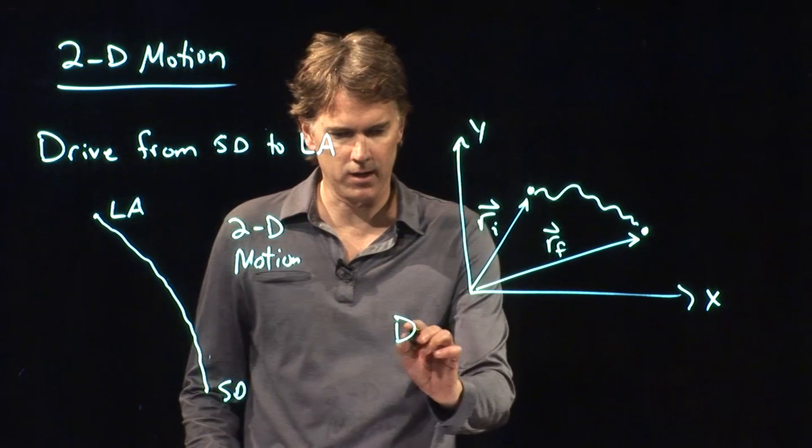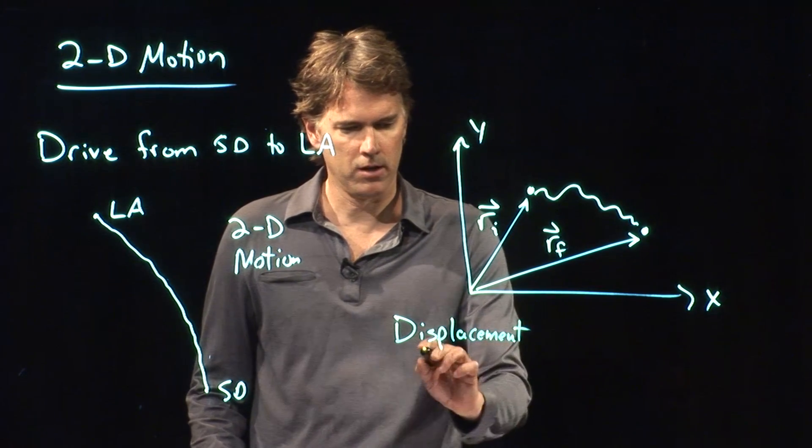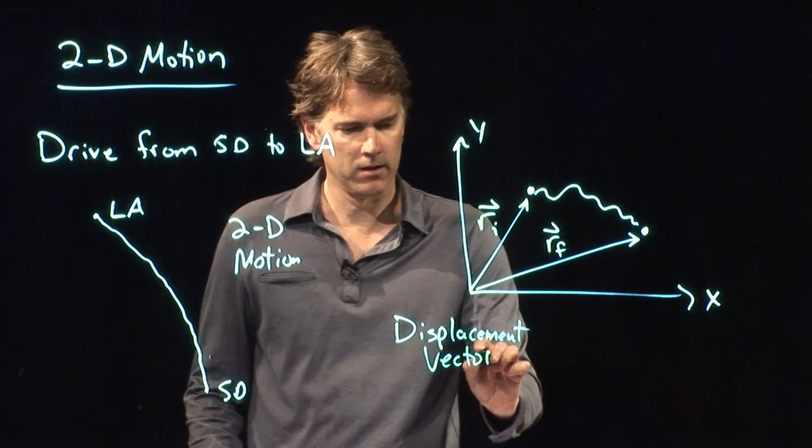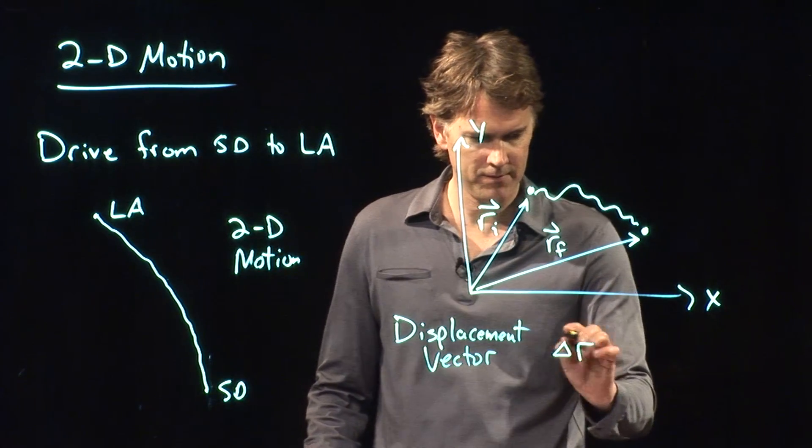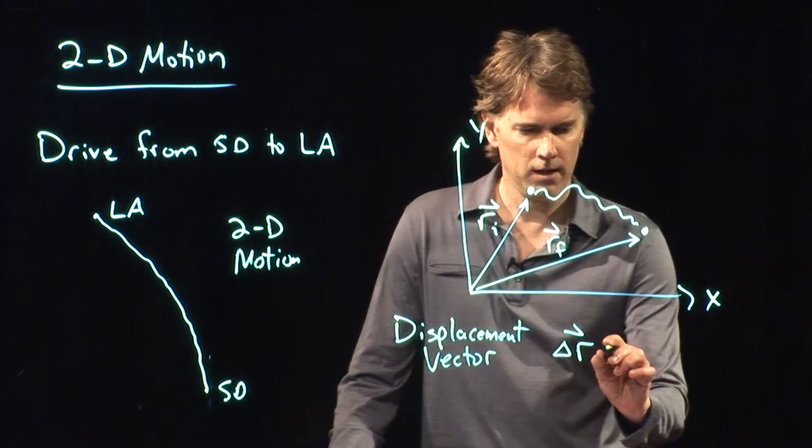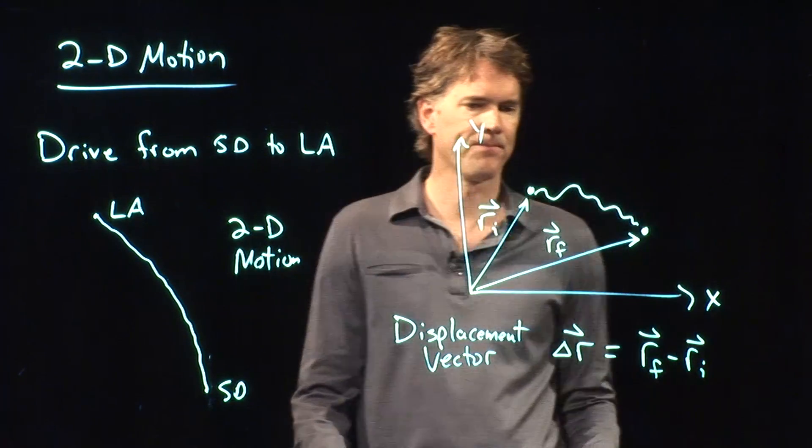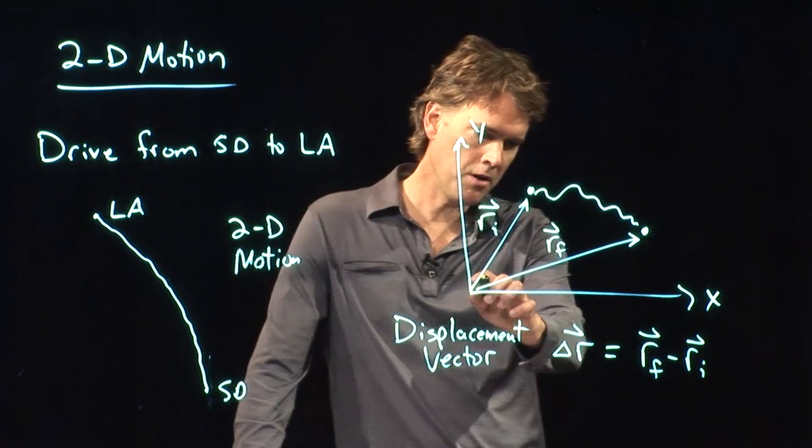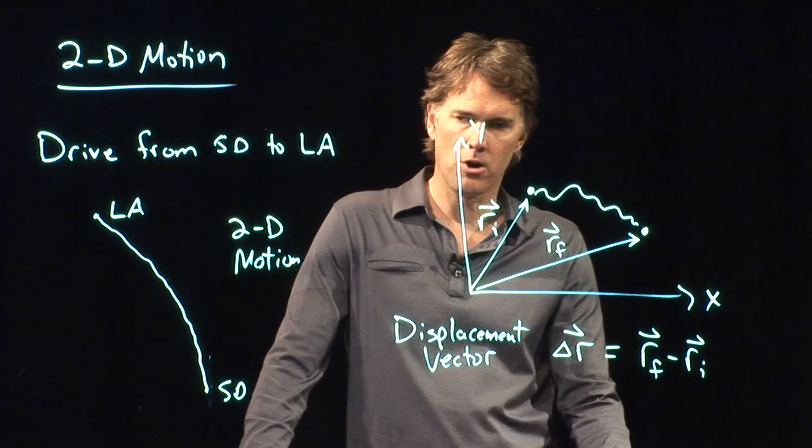And so, usually, when you're interested in physical quantities, you are interested in the difference between those two. And the displacement vector, delta R, which is where did you go, it is R final minus R initial. Okay, there's our R final. That was our R initial.